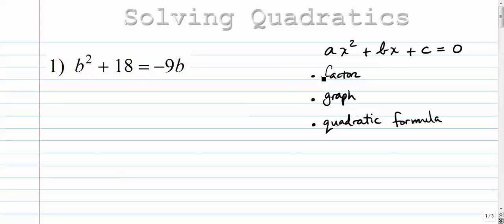So for number one here, we notice that it's not really in the nice form. This is our nice form. This is when everything is in standard form. This is not, so we need to get the linear term over to the left side. So we're going to simply add 9b to both sides. And we want three terms on the left and a zero on the right.